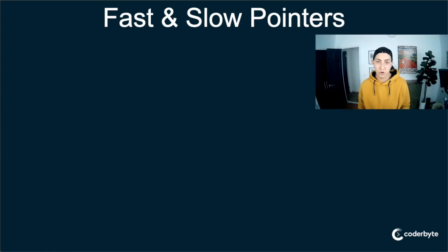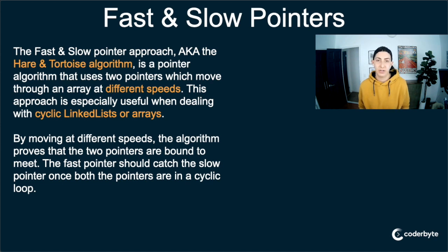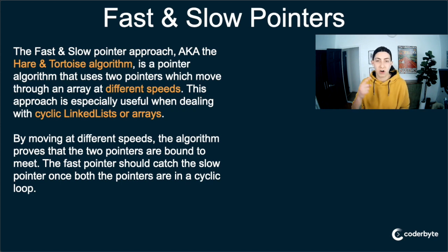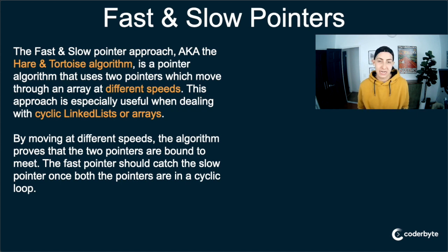Fast and slow pointers — what am I talking about? The fast and slow pointer approach, also known as the hare and tortoise algorithm, is a pointer algorithm that uses two pointers which move through an array, a linked list, or similar structure at two different speeds. This approach is especially useful when dealing with cyclic linked lists or arrays — finding a cycle in a linked list or an array. By moving at different speeds, the algorithm proves that the two pointers are bound to meet. The fast pointer should catch the slow pointer once the pointers are caught in that cyclic loop. Imagine two runners running on a track — a track is a cycle. The proof that there is a cycle is that the fast runner will meet the slow runner at some point. If they never meet, it's not a cycle.